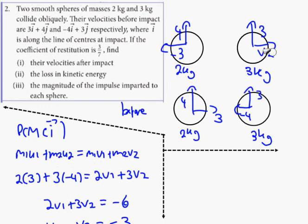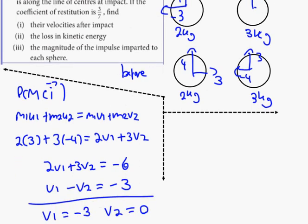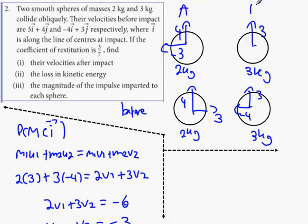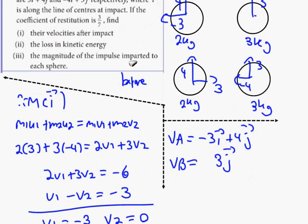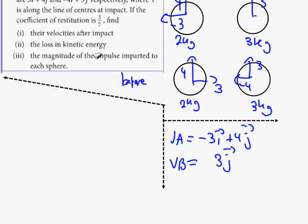Your velocities after the collision: call them particle A and particle B. V1 equals minus 3i plus 4j - it basically got reversed. The other one, V2, is just going to be 3j. Next one is the loss in kinetic energy. How would you go about doing that? Kinetic energy before minus kinetic energy after.